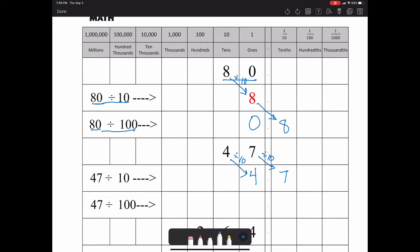Now if we take 47 divided by 100, they're going to shift two spaces, both the 40 and the 7.